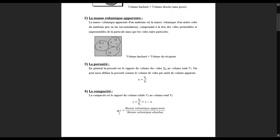Nous avons une troisième formule de la compacité : c'est la masse volumique apparente divisée par la masse volumique absolue. C'est-à-dire le volume de tout ce qui est solide divisé par le volume total, en passant par les masses volumiques. Ayant compris le cours, sans plus tarder, nous allons partir maintenant à l'exercice.